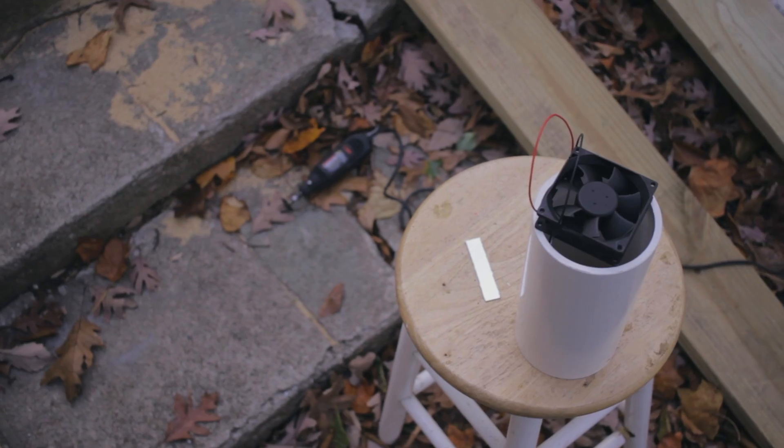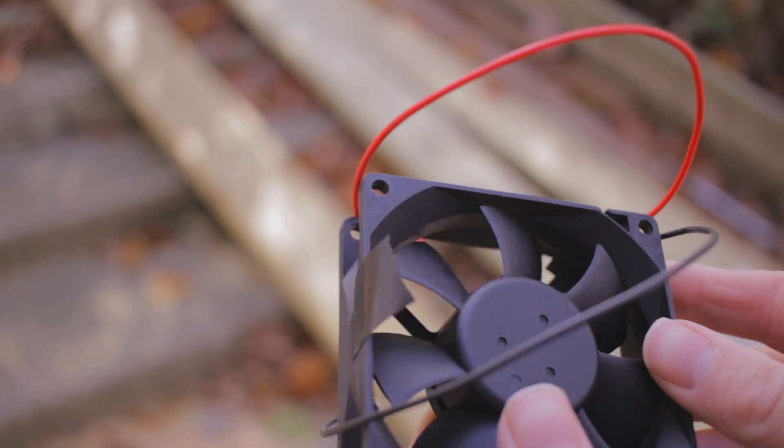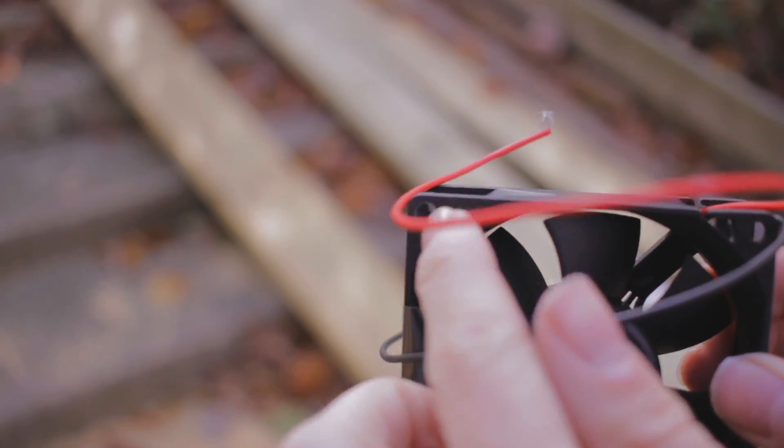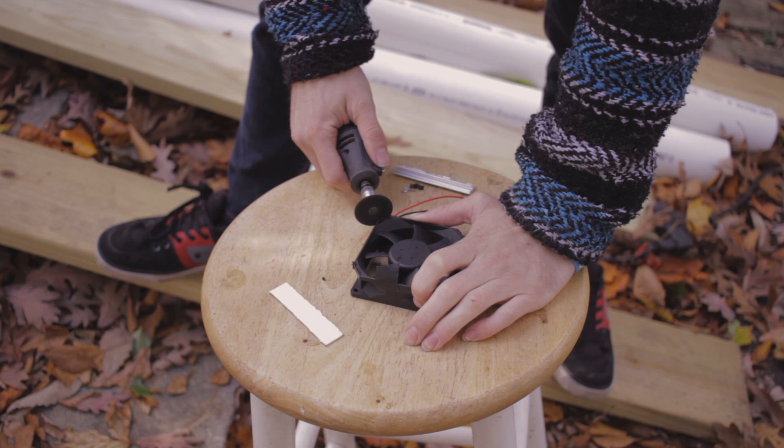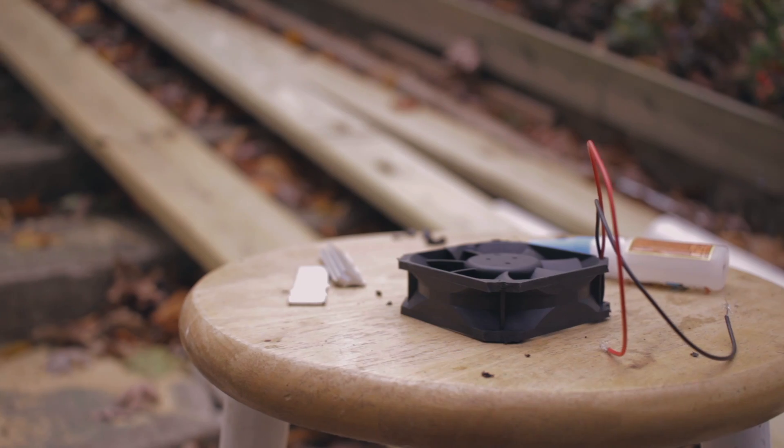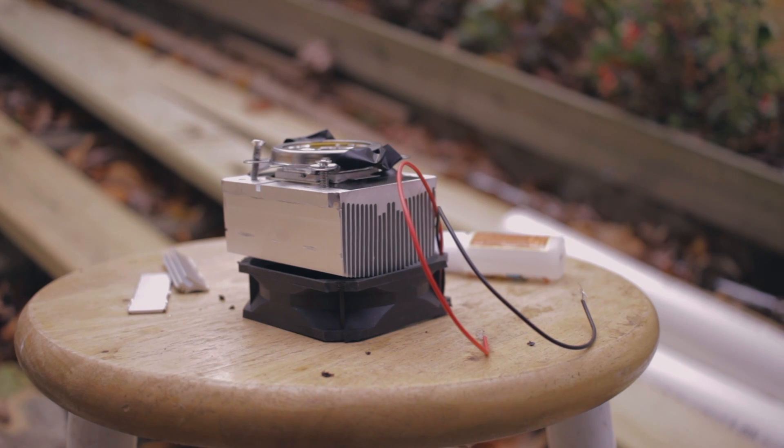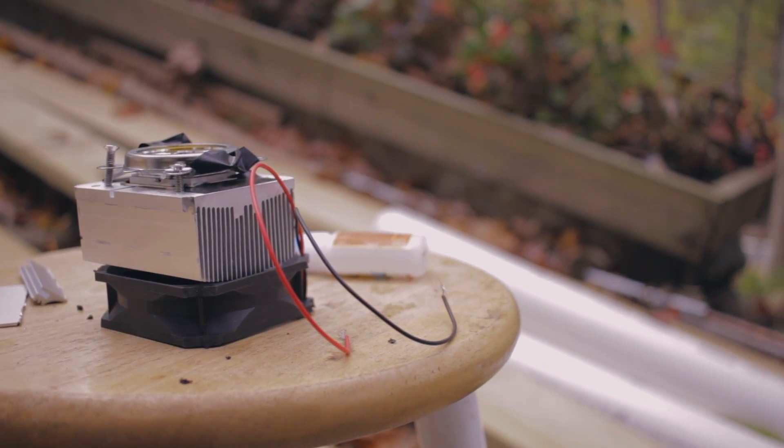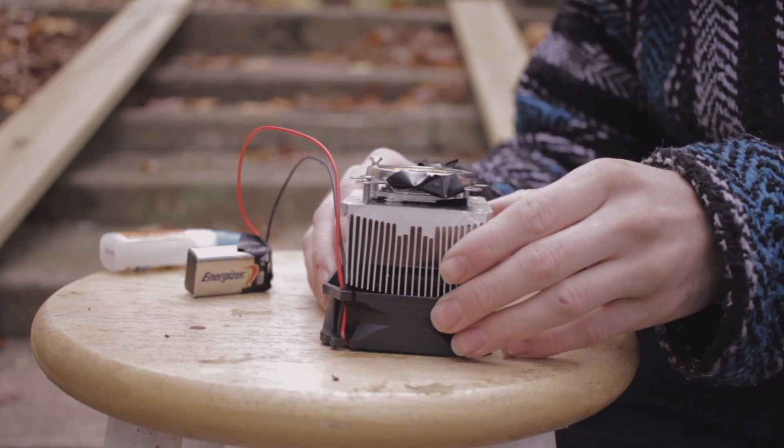Now grab that fan from the heat sink we had earlier and we're going to want to cut the corners off of the fan as well. This way the fan will now fit into the PVC pipe. Once you make sure that the heat sink and the fan fit into the PVC pipe, lay them on top of each other and we're going to glue them together with some super glue.